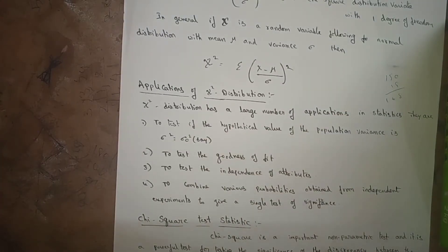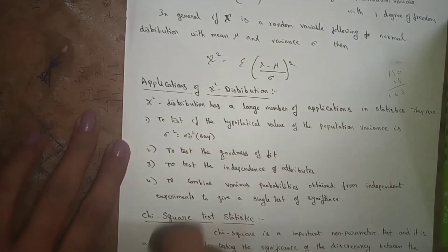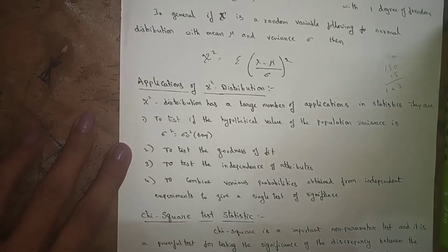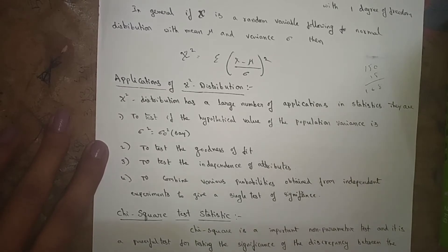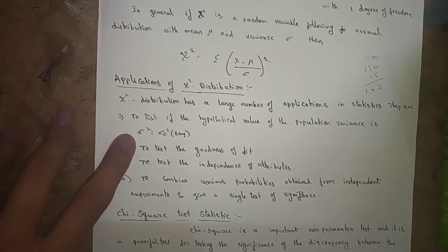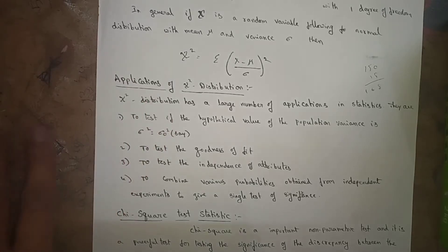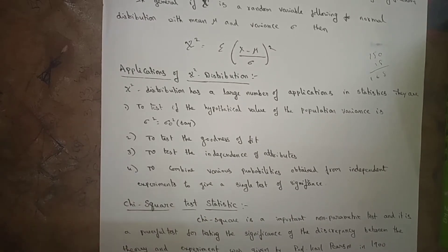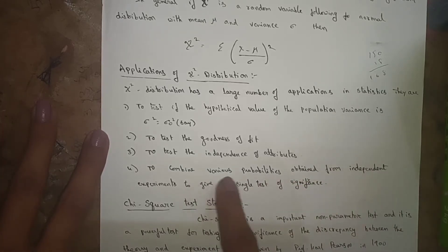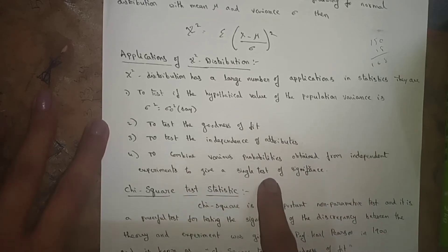Now, the applications of chi-square distribution — where we have to apply this chi-square distribution. Chi-square distribution has a large number of applications in statistics. First, to test if the hypothetical value of the population variance sigma-square equals sigma-naught-square. Second, to test the goodness of fit. Third, to test the independence of attributes. Fourth, to combine various probabilities obtained from independent experiments to give a single test of significance.